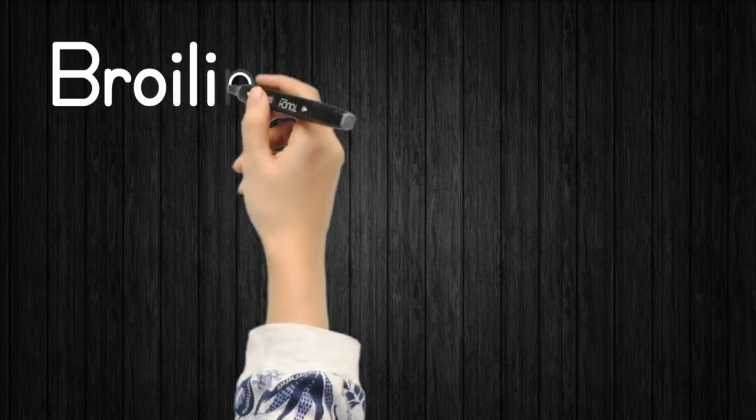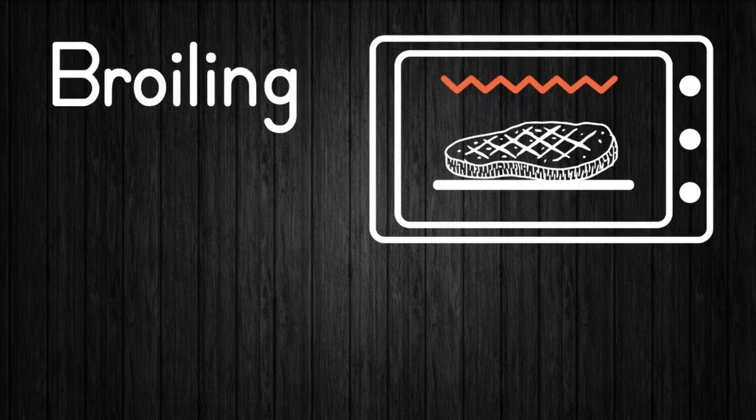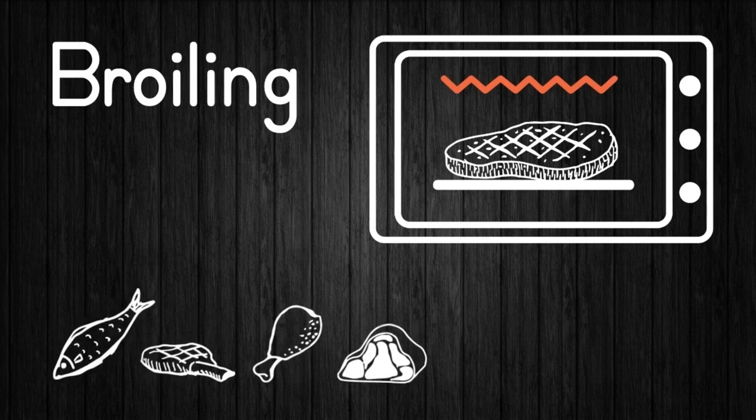Broiling is a dry heat cooking method that uses direct heat, similar to grilling. However, in broiling, the heat source is above the food. Broiling is considered a healthier way to cook since the heat coming from above causes the fat of the food to drip below. The most common recipes for broiling are usually meats.